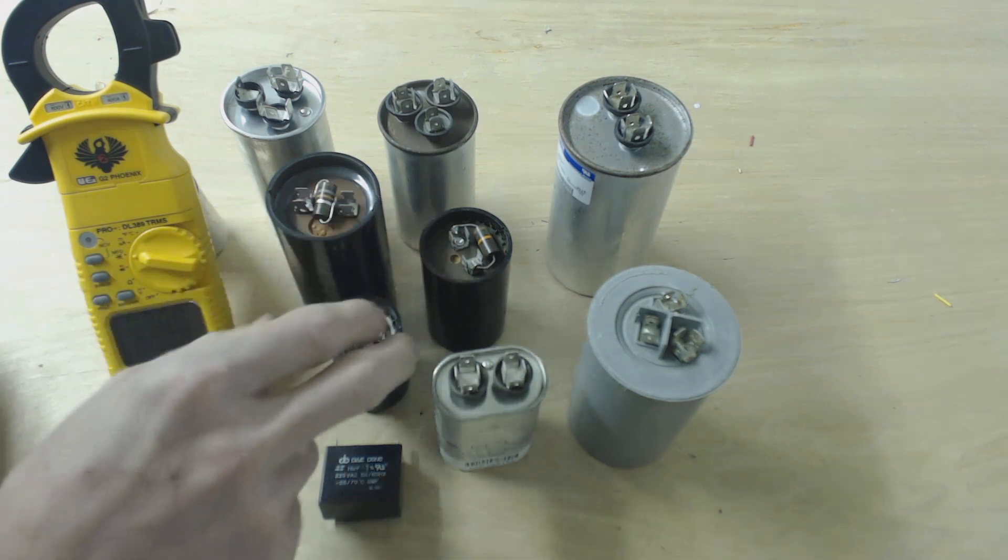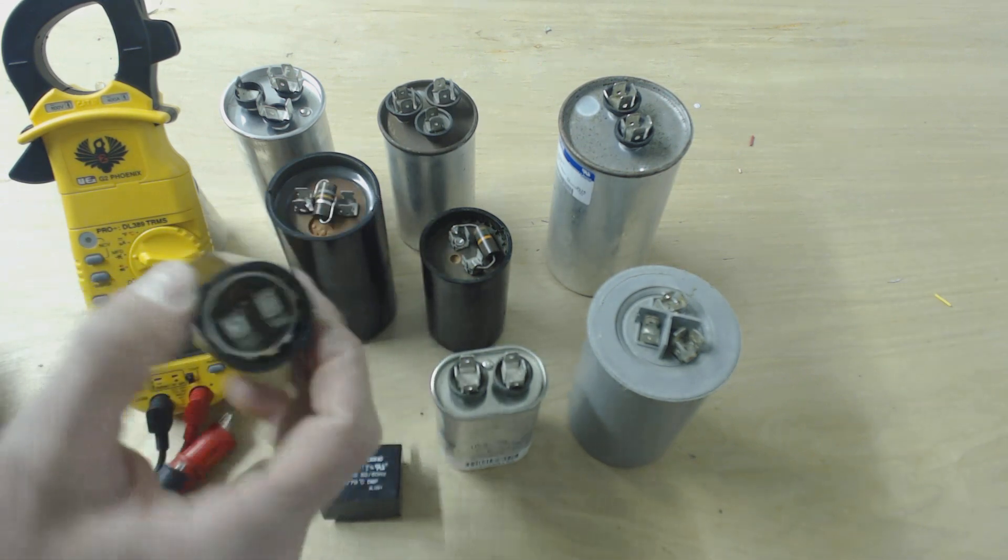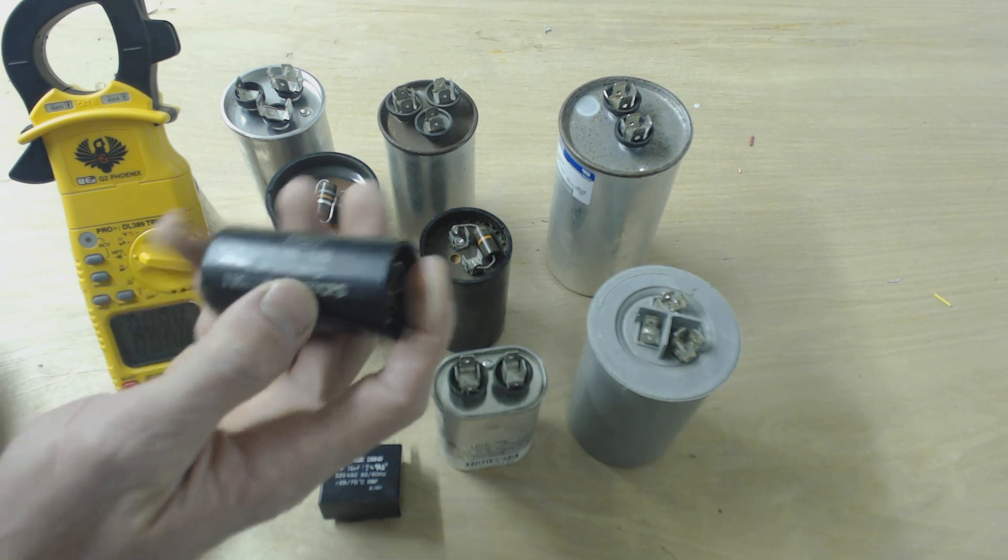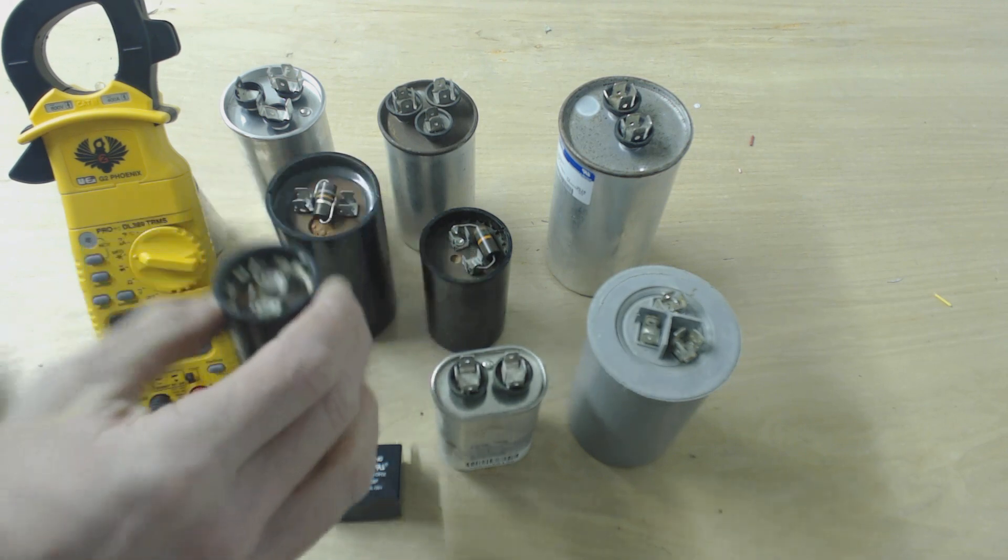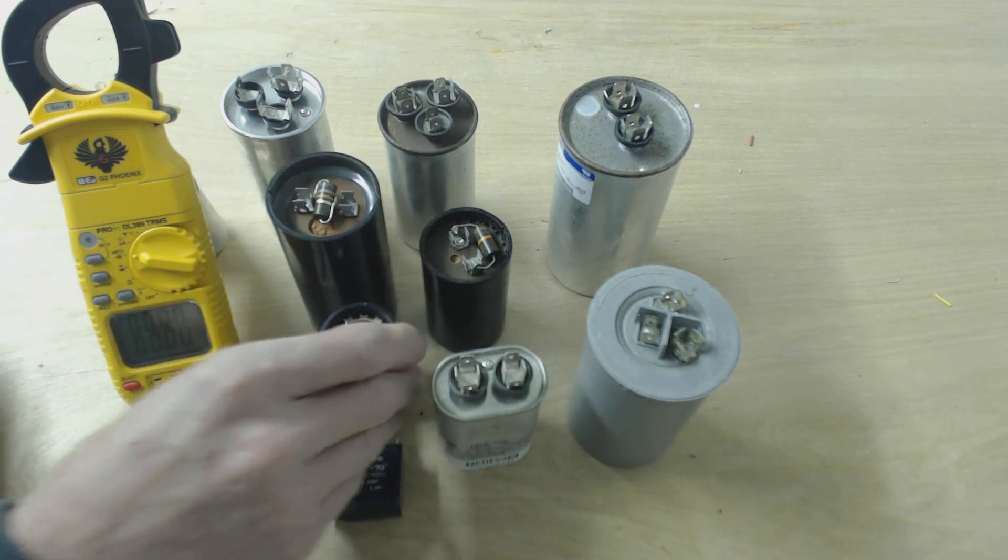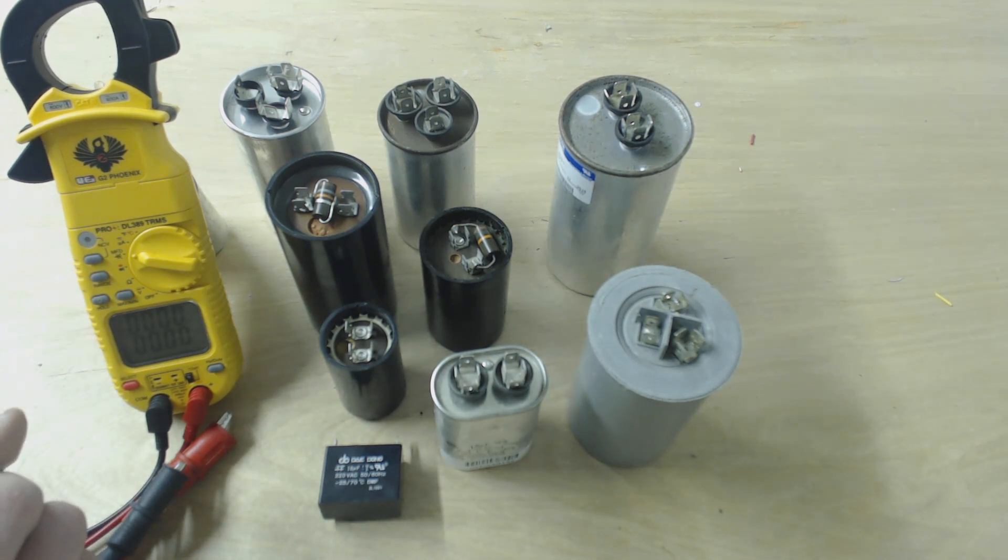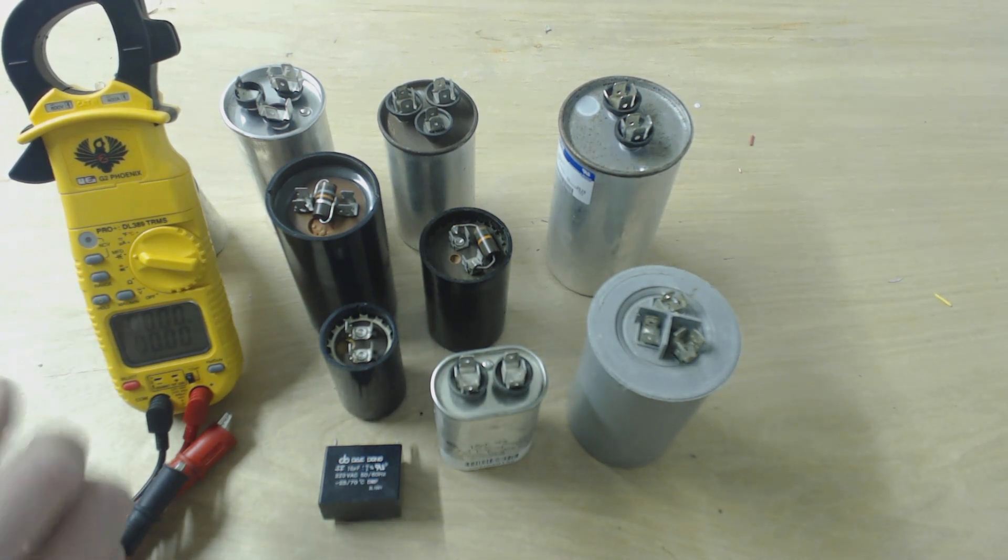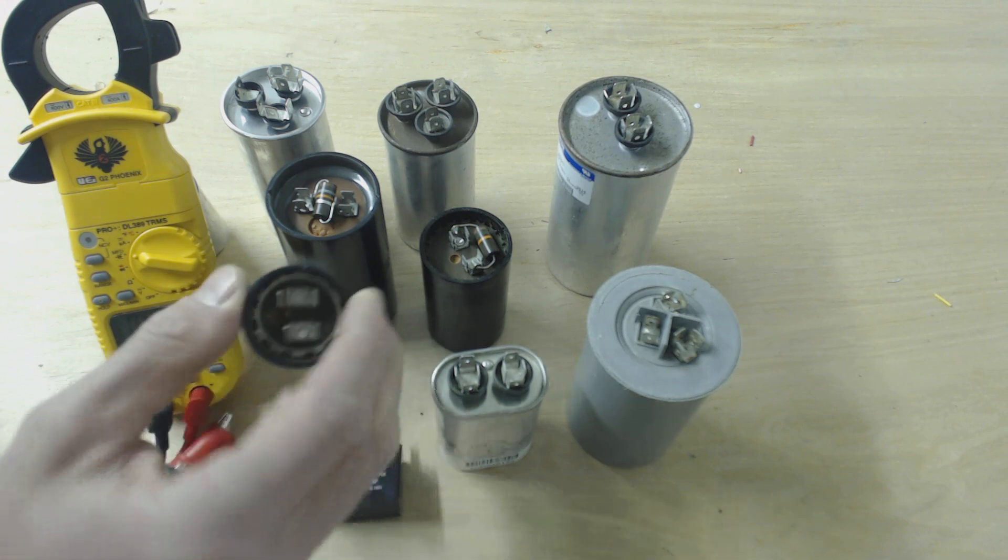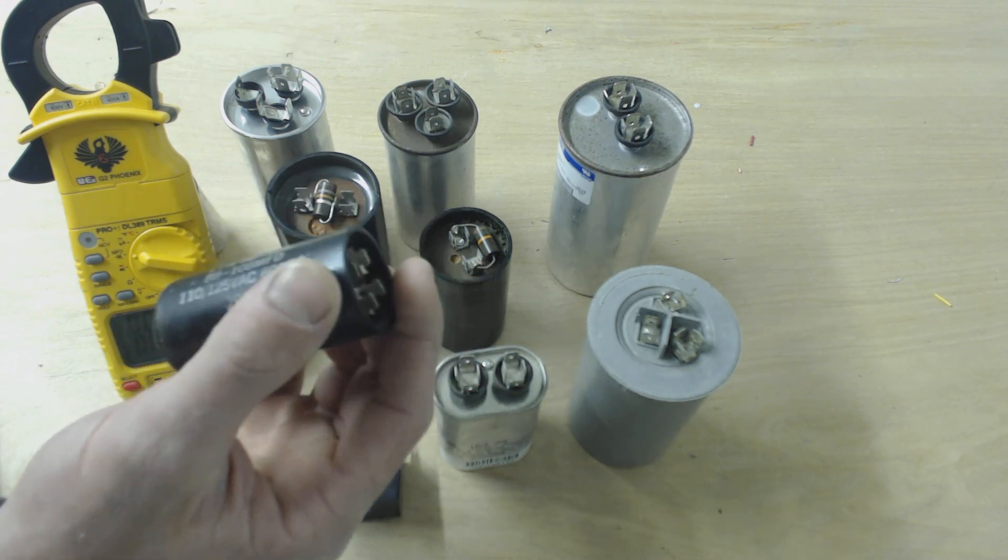These black ones that look like this are usually start capacitors and they have a higher MFD rating. The MFD rating is microfarads, and that's measuring capacitance, the amount of storage capacity it has for voltage storage.